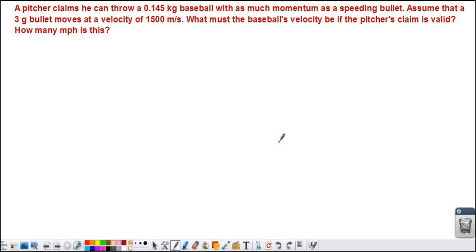A pitcher claims he can throw a 0.145 kilogram baseball with as much momentum as a speeding bullet. Assume that a 3 gram bullet moves at a velocity of 1,500 meters per second. What must the baseball's velocity be if the pitcher's claim is valid? How many miles per hour is this?